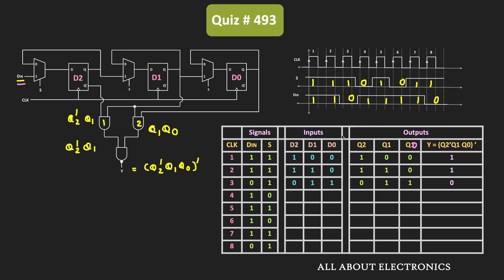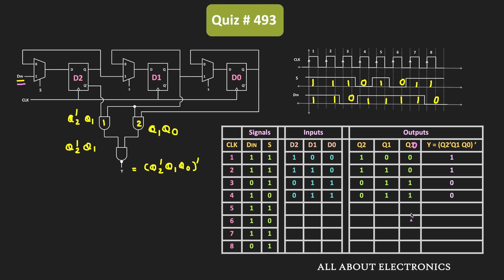During the fourth clock cycle, the value of S becomes 0. Whenever S input is 0, the output of the flip-flop is fed back as input to the same flip-flop, meaning the flip-flop retains its current state. That means during the fourth clock cycle, the inputs D2, D1 and D0 are 0, 1, 1. After the fourth clock pulse, the same will be available at the output side, and based on these flip-flop outputs, Y will remain 0.